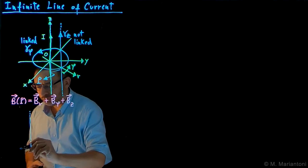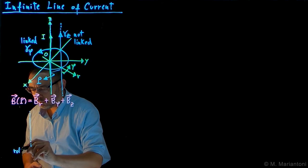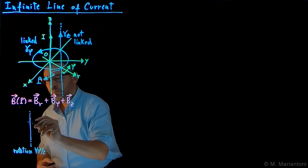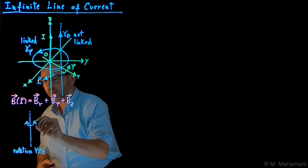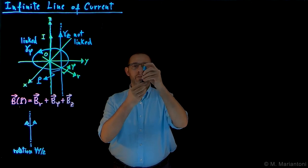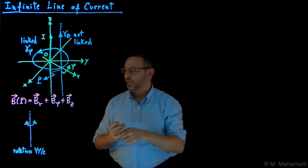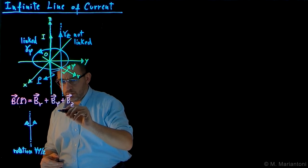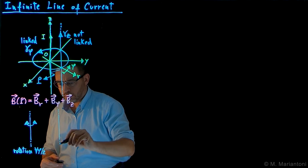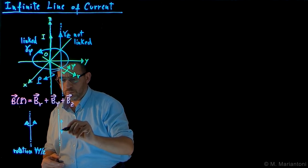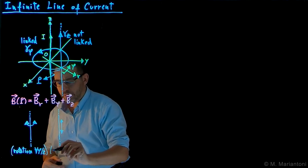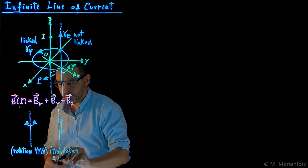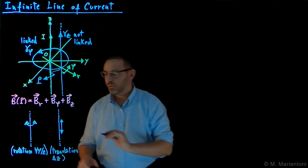The first symmetry is rotational symmetry of any angle phi about the z-axis — that is, we can rotate this line by any angle around the z-axis and nothing changes. The second symmetry is translational symmetry by any amount delta z, upwards and downwards along the z-axis.